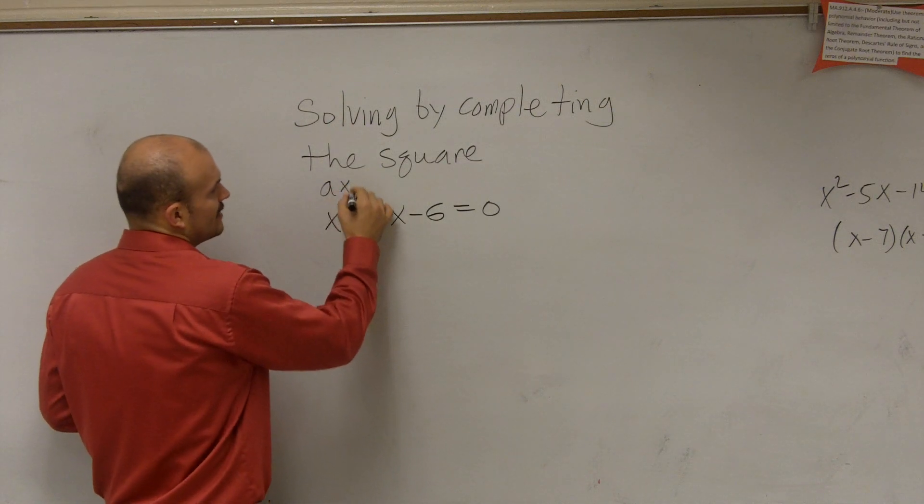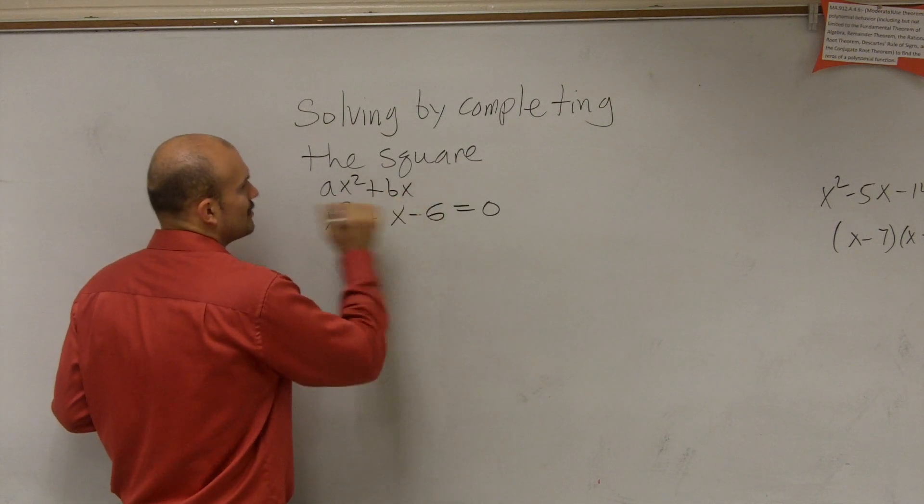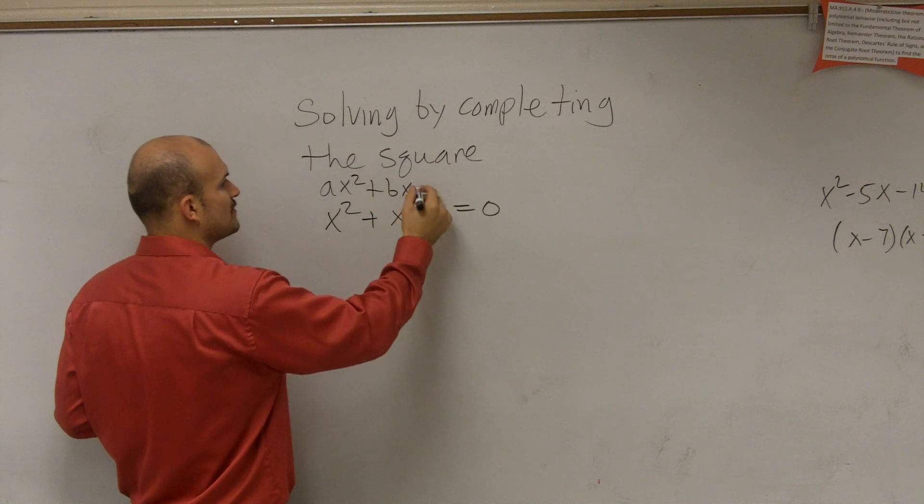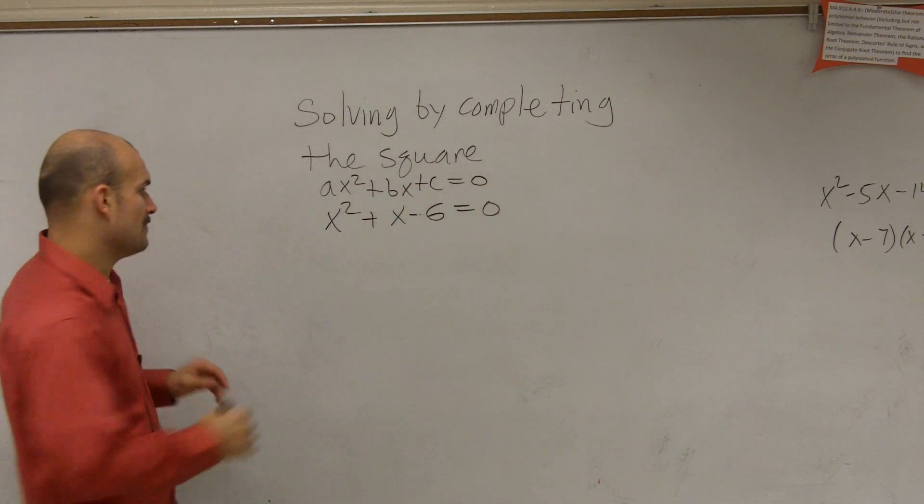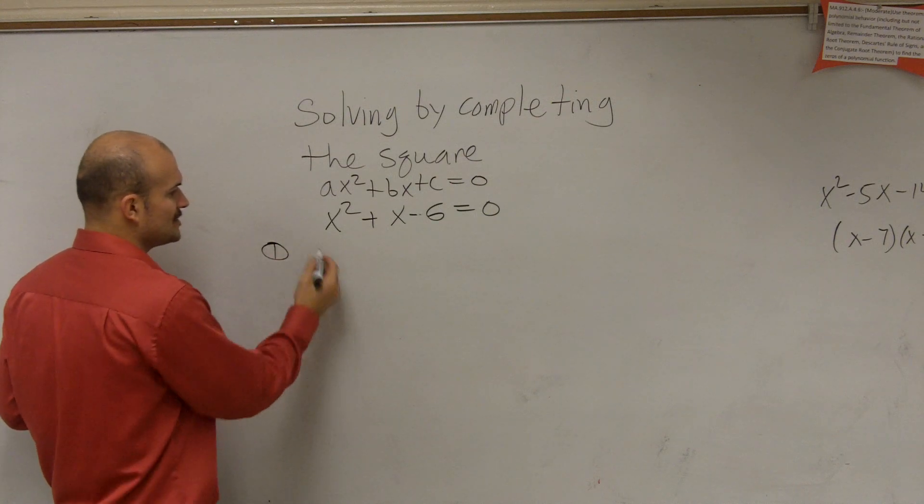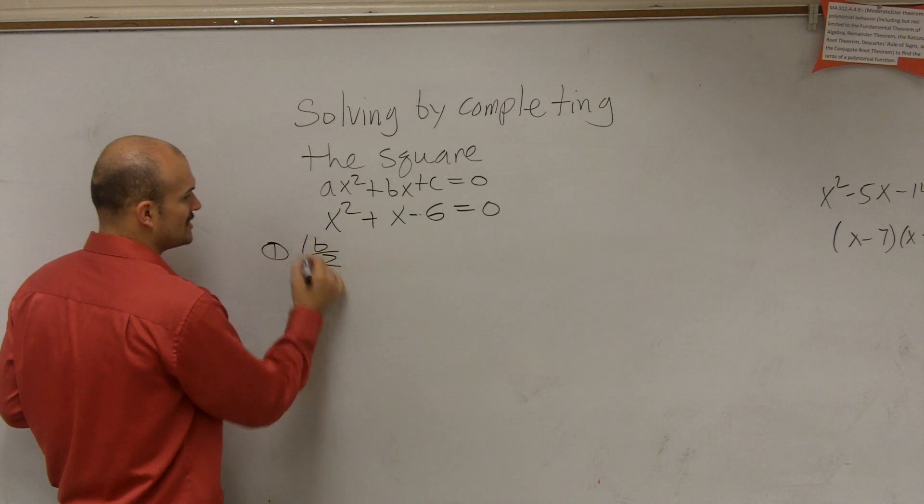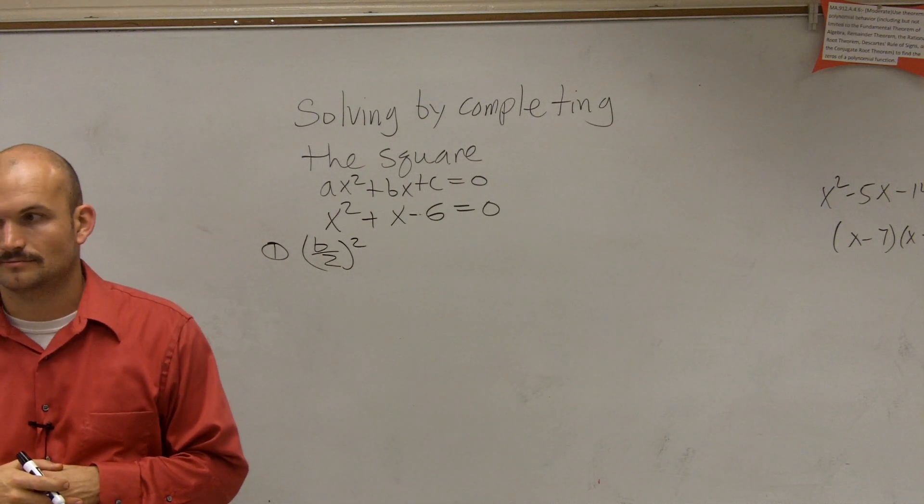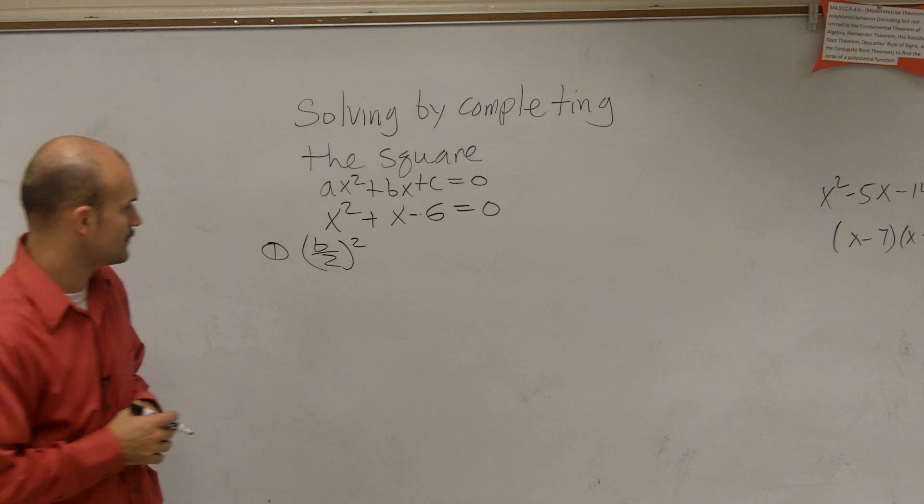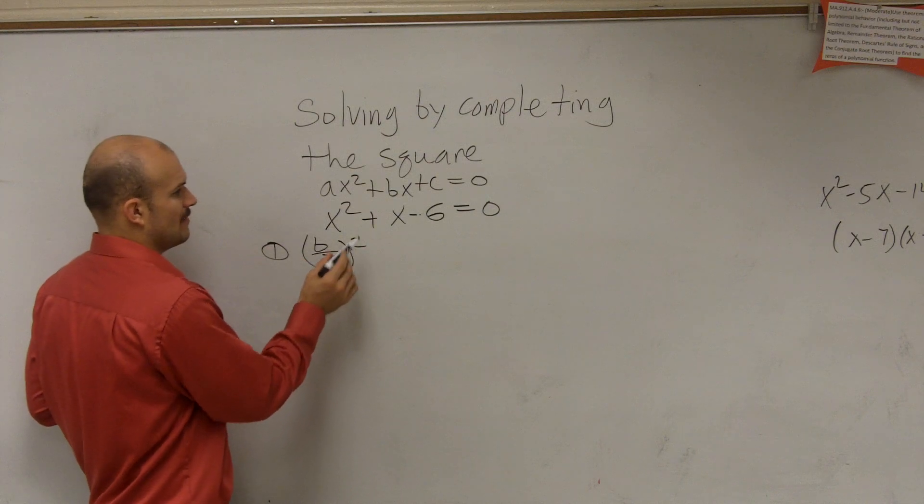The first thing is understanding that all quadratics can be written in this form: Ax squared plus bx plus C equals zero. So if you guys remember, the first step is to do b divided by 2 and square it.